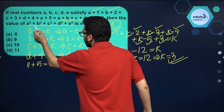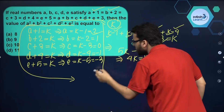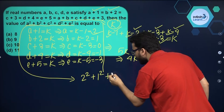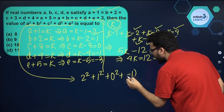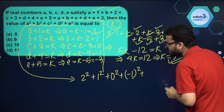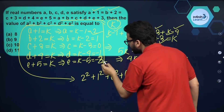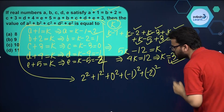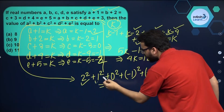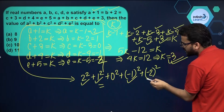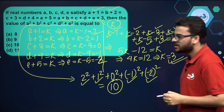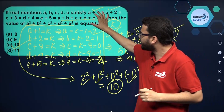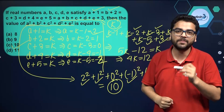So a² = 2² = 4, b² = 1² = 1, c² = 0² = 0, d² = (−1)² = 1, and e² = (−2)² = 4. Adding these: 4 + 1 + 0 + 1 + 4 = 10. Therefore a² + b² + c² + d² + e² = 10. If you try to form many equations, it will waste your time. I hope the question is clear.